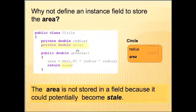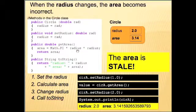So when the radius changes, the area becomes incorrect. Originally, the radius could be set to 1, which would make the area 3.14. But if later you change the value of radius, and you don't update area, area is now wrong because it stays 3.14. This is what's called stale data.